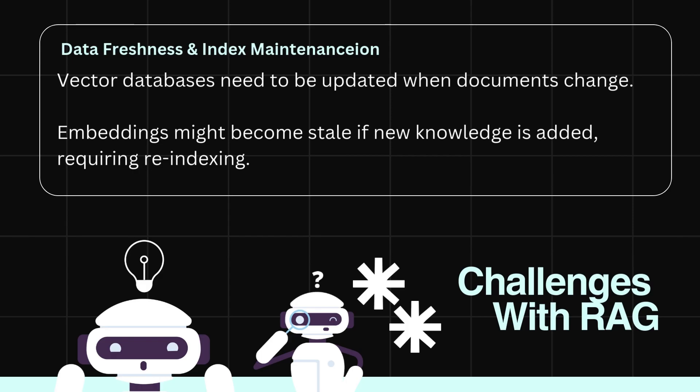Sixth, data freshness and index maintenance: vector databases need to be updated when documents change, and embeddings might become stale if new knowledge is added, requiring re-indexing.